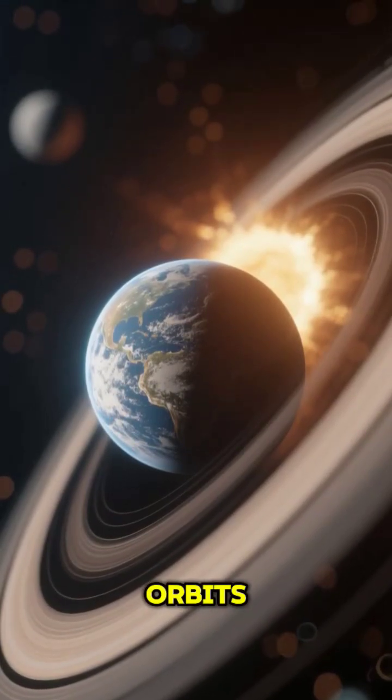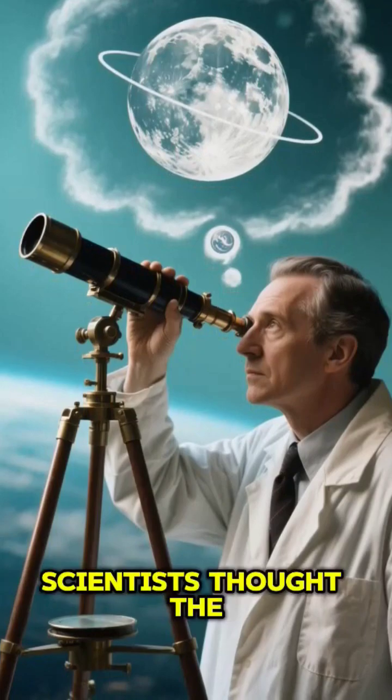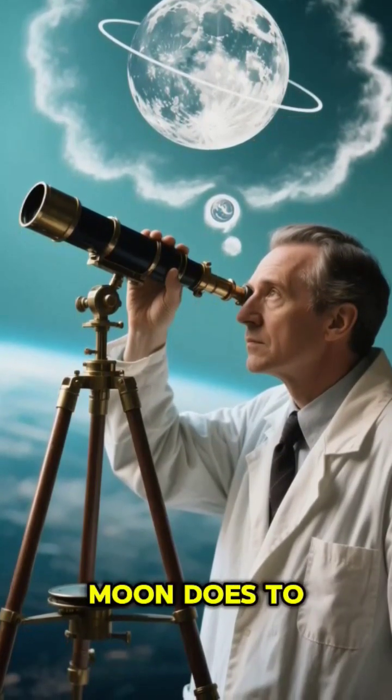For every two orbits, Mercury spins three times on its axis. Until 1965, scientists thought the same side always faced the Sun, just like our Moon does to Earth.